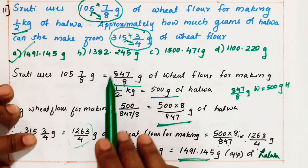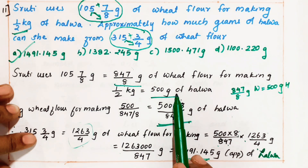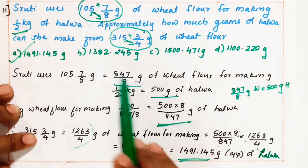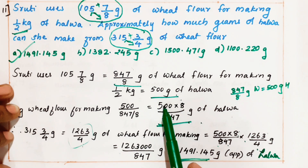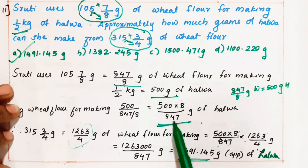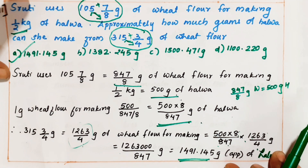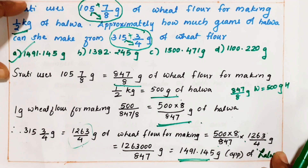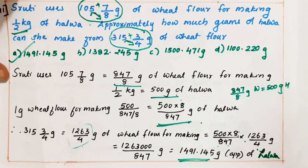So what we got: this many grams of wheat makes 500 grams of halwa, then for 1 gram we calculated, and then for 1263/4 grams, we multiply: 500 into 8 by 847 into 1263/4, and we get the answer 1491.145 grams.